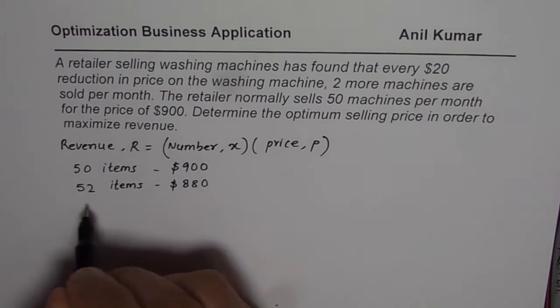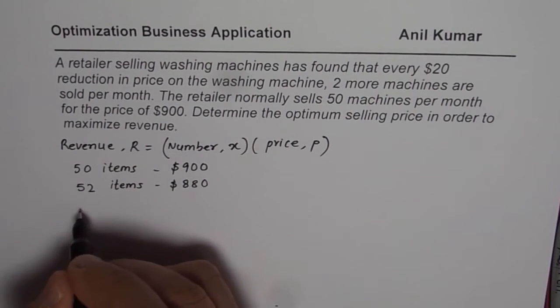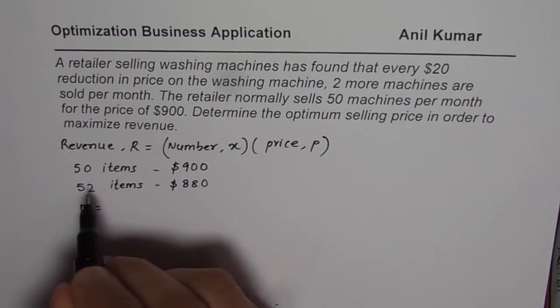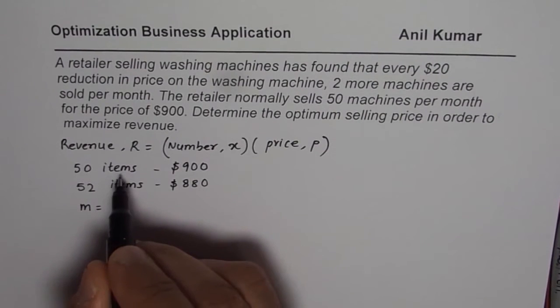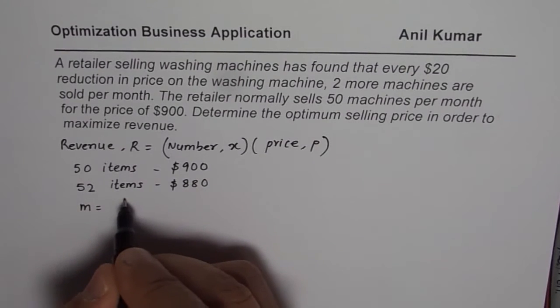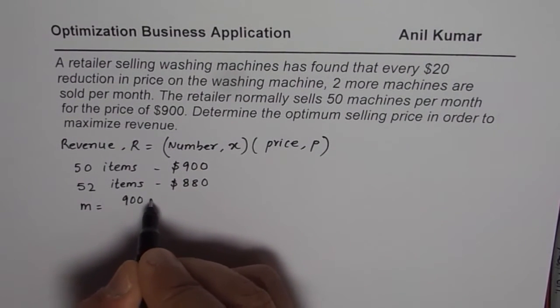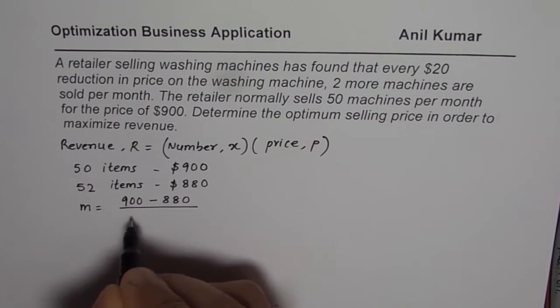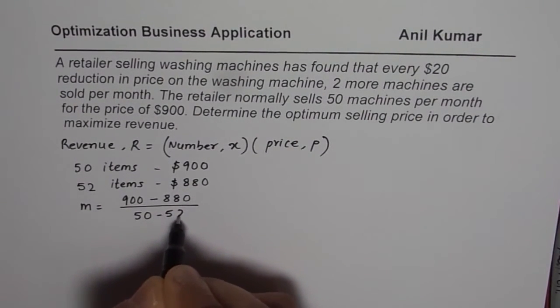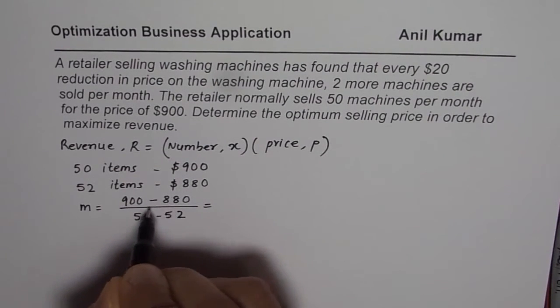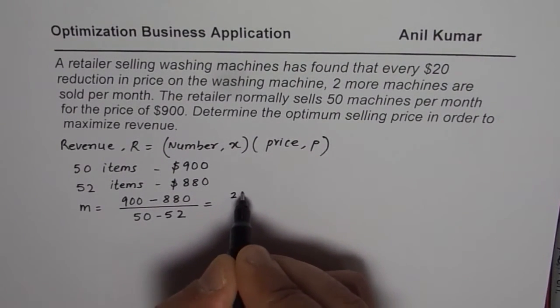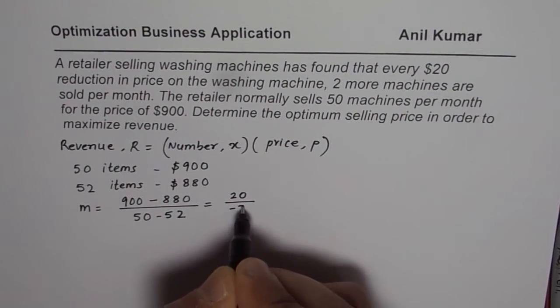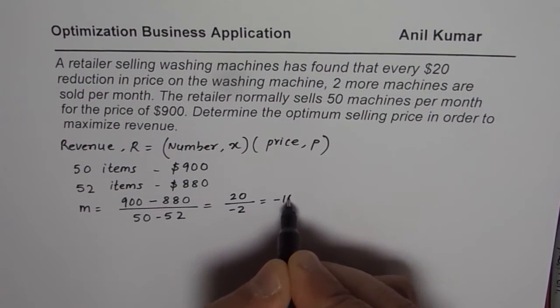Since it is linear, we can find an equation relating them. Let us find first the slope M as the relation between the change in the price resulting into items sold. So we do $900, that is Y2 minus Y1, $880, $900 minus $880 divided by 50 minus 52. $900 and this is a price reduction of $20, and here there is increase by 2, so that is minus 2. That gives us slope of minus 10.